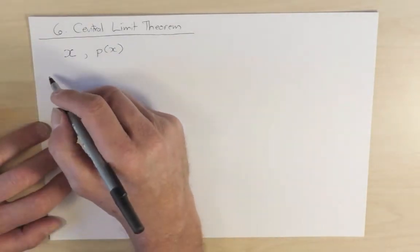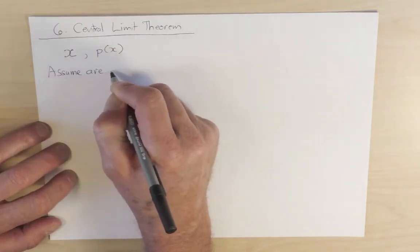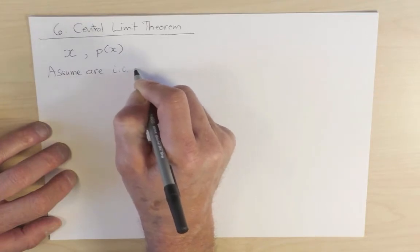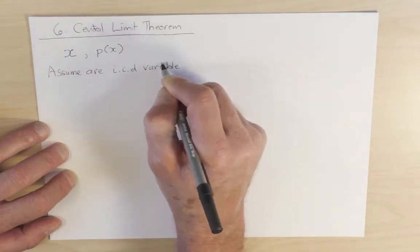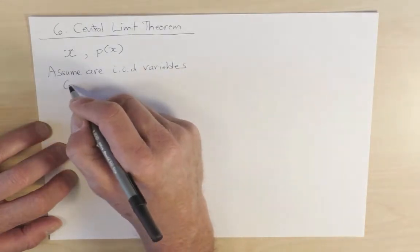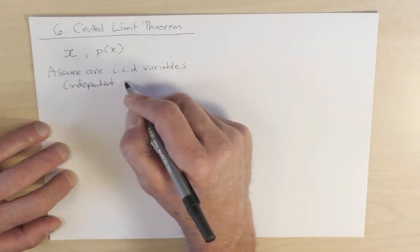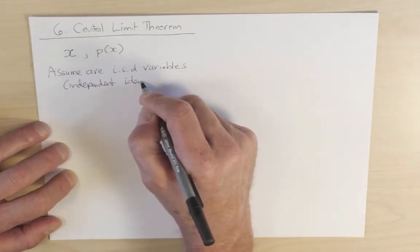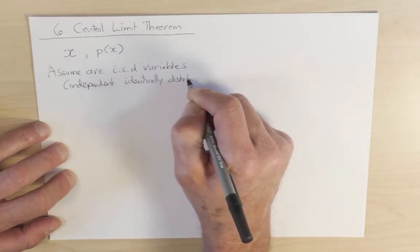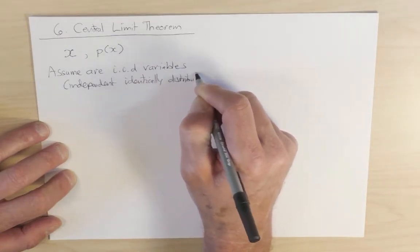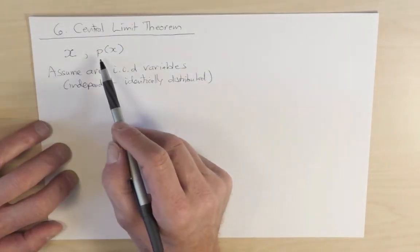Let us assume that these little x's are IID variables. This is a standard acronym for independent identically distributed, so independent and identically distributed. That is, for each x, p of x is the same distribution function.